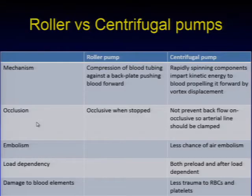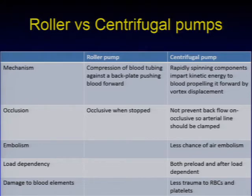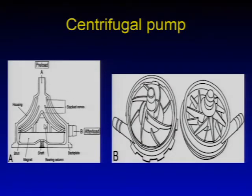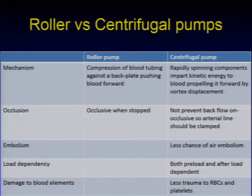The essential differences between roller pumps and centrifugal pumps: the roller pump compresses blood tubing against a back plate pushing blood forward, whereas the centrifugal pump uses rapidly spinning components like a cone or vane to impart kinetic energy to blood, propelling it forward by vortex displacement. Roller pumps are occlusive when stopped, preventing backflow automatically. Centrifugal pumps do not prevent backflow, so the arterial line must be clamped when stopped. Chances of embolism and trauma to RBCs and platelets are less with centrifugal pumps, which are both preload and afterload dependent.